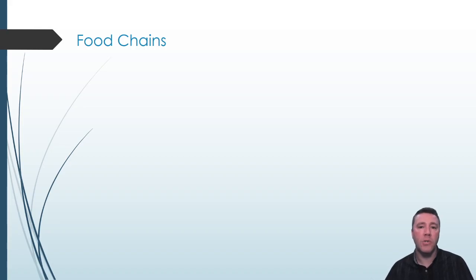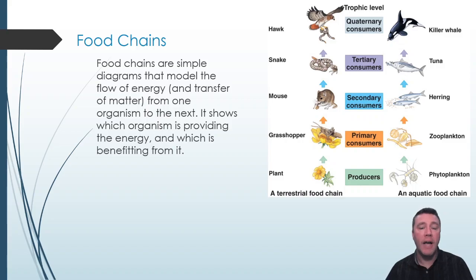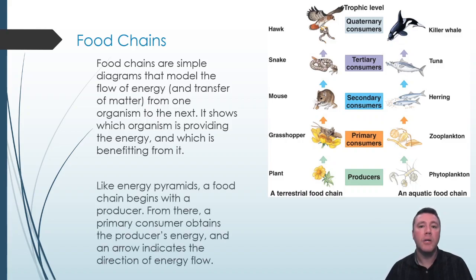Food chains are a simple way of illustrating the flow of energy from one organism providing that energy to another organism that receives it. Just like the pyramid diagrams, food chains begin with the producers, or autotrophs, carrying out photosynthesis. The arrows connecting individual organisms indicate the provider and the recipient of the energy.